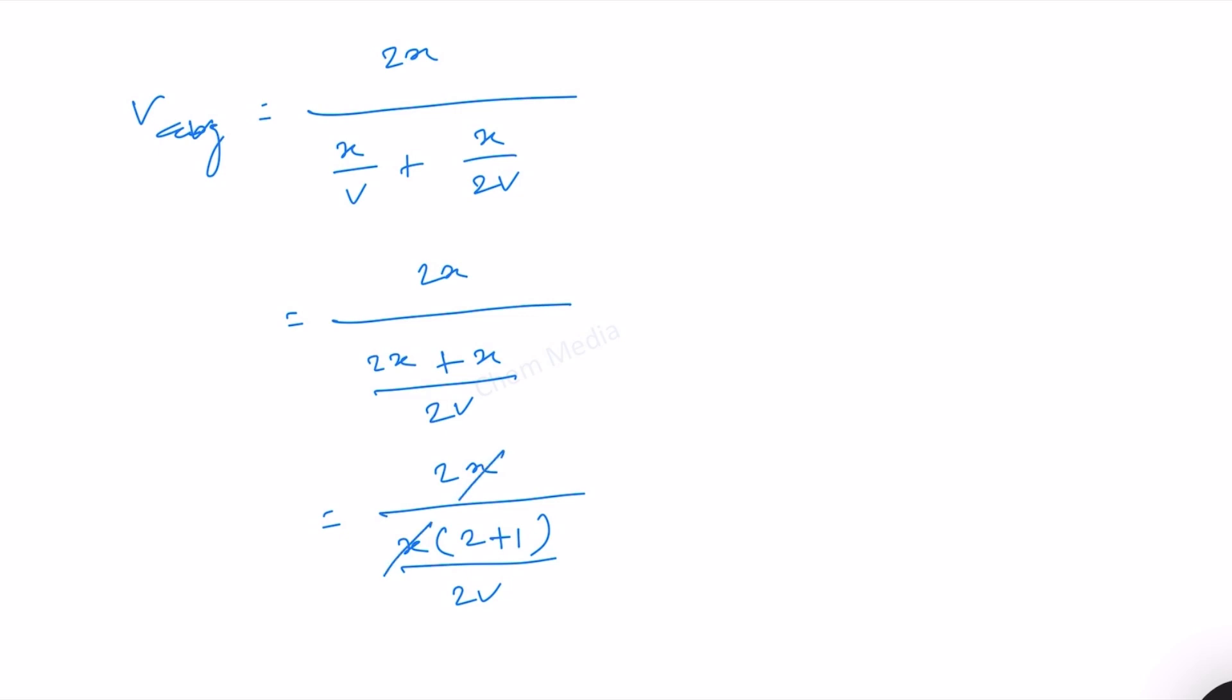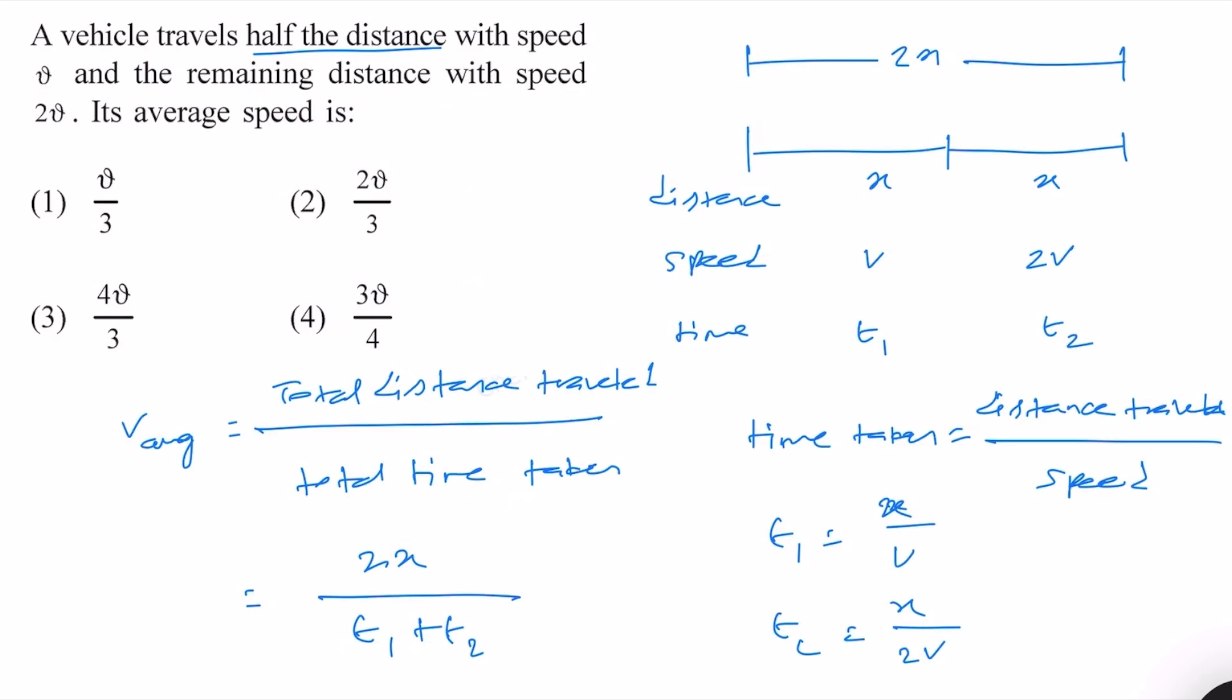x times x cancel. Therefore, this will be equal to 4v by 3, because when the 2v goes closer, this will become 4v. Therefore, option 3 is correct.